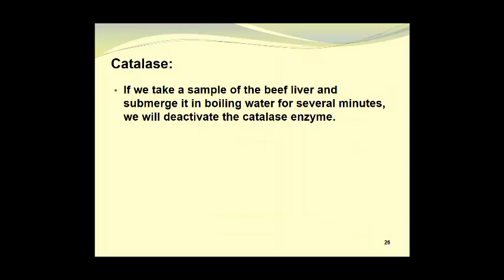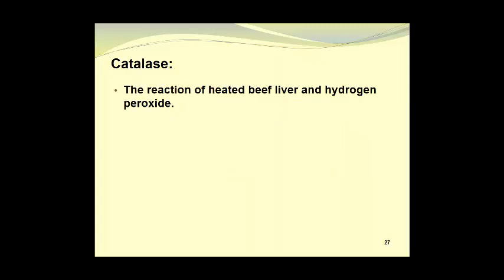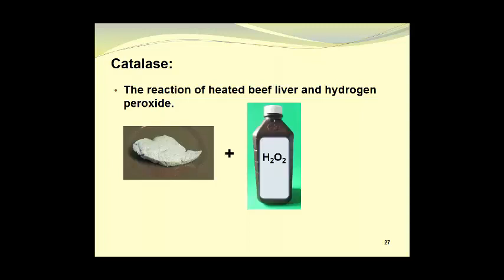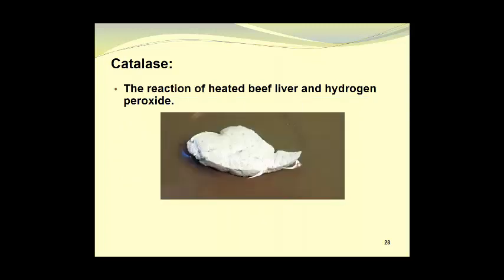If we take a sample of the beef liver and submerge it in boiling water for several minutes, we will deactivate the catalase enzyme. This is because the input of heat changes the structure or configuration of the enzyme so that it is no longer biologically active. The reaction of heated beef liver and hydrogen peroxide will look like this. Here's the heated piece of beef liver. We add the hydrogen peroxide and what we end up with is absolutely nothing happening. So there is no enzymatic activity to show.